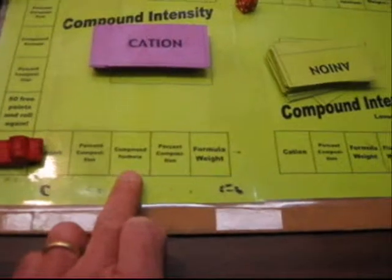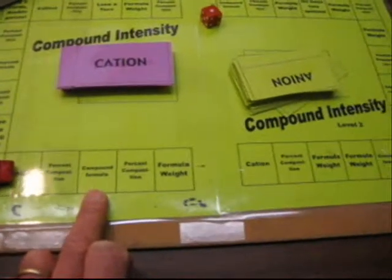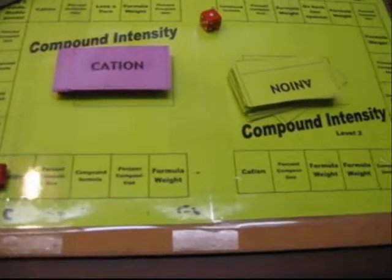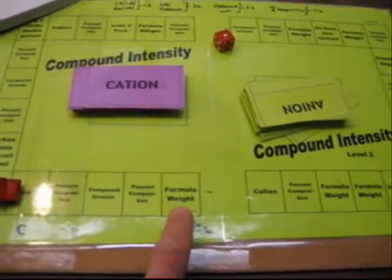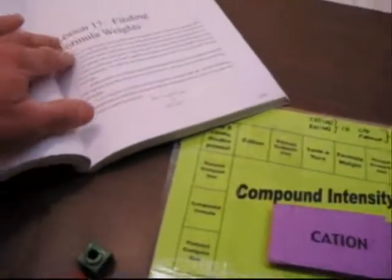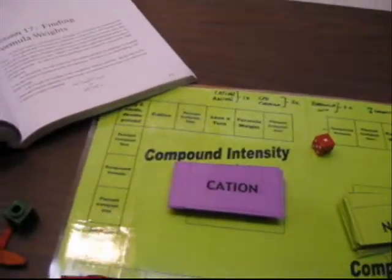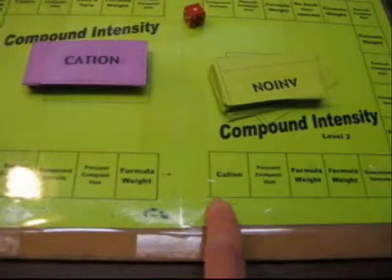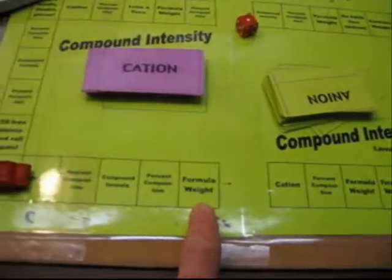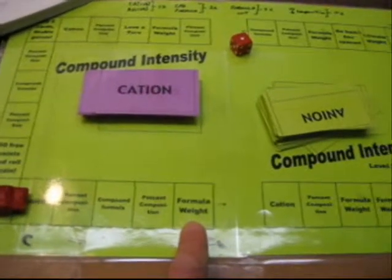In addition to having compound formula on level one, another space that you'll find on the board is that of formula weight. Finding a formula weight is the focus of Lesson 17. You'll have introduced the procedures and steps for finding formula weights or molar masses. It means the same thing. This is where the students will practice finding a formula weight of various compounds.